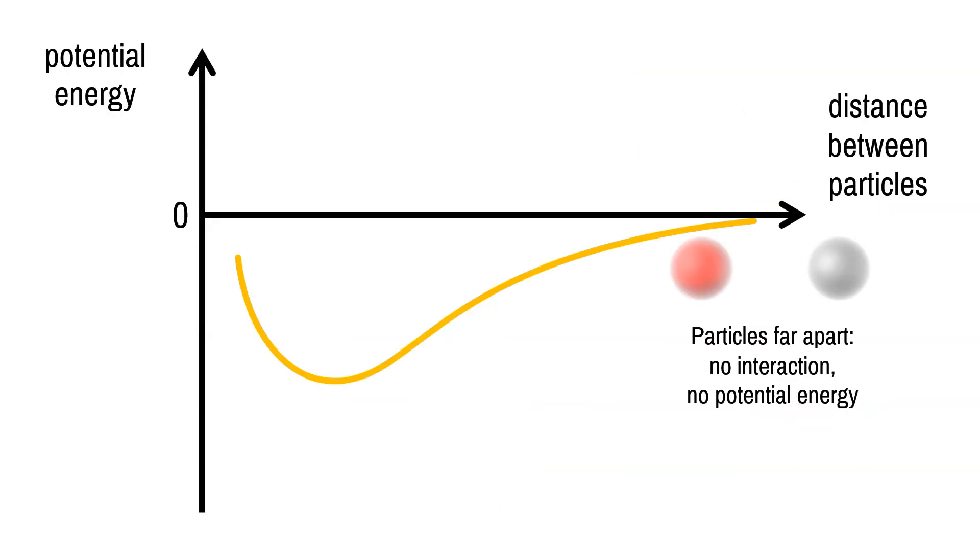Well, potential energy between interacting particles is zero when they are very far apart and therefore not interacting. By consequence, the potential energy of a bound system is negative, which makes sense since we have to give energy to the system to unbind it and restore it to the zero energy configuration.